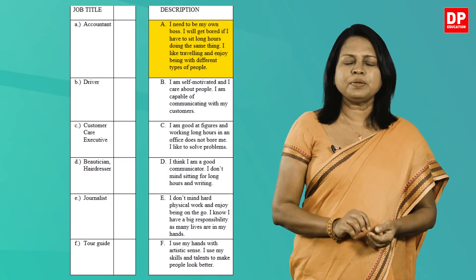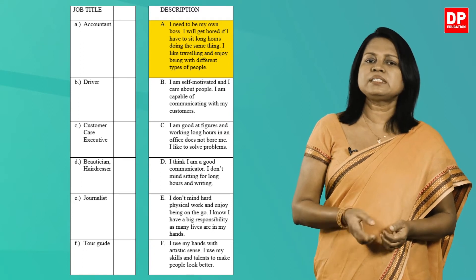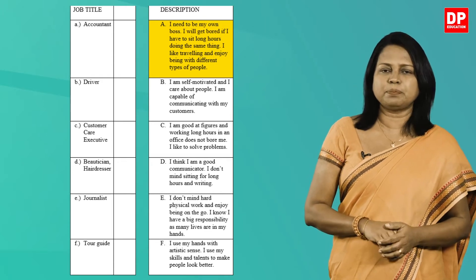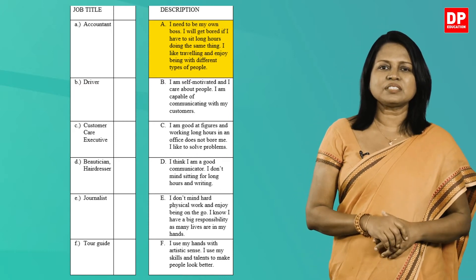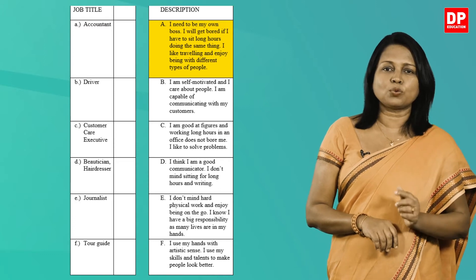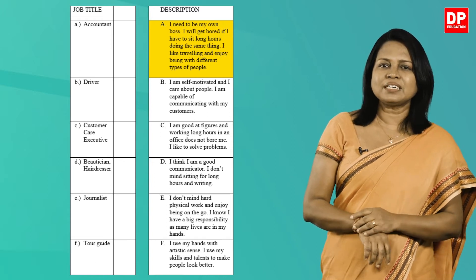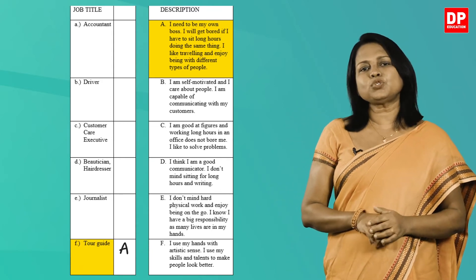Let's check your answers now. Let's read each description and find the suitable job title. First description: I need to be my own boss. I will get bored if I have to sit long hours doing the same thing. I like traveling and enjoy being with different types of people. The speaker says he is his own boss and enjoys traveling and being with people. The answer is tour guide, so write A against tour guide.